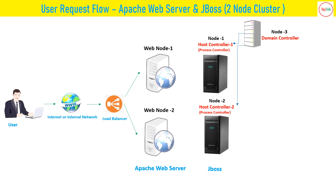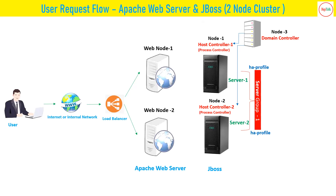Apart from node 1 and node 2, we have a third machine which is the domain controller. This domain controller centrally controls node 1 and node 2 — all deployments and configurations for node 1 and node 2 are done from this central console or central server. This is similar to the admin server in WebLogic Server. So we have three machines: node 3 is the domain controller controlling node 1 and node 2 where applications are deployed. We have a server group called server group 1, created with the HA (high availability) profile, containing server 1 on node 1 and server 2 on node 2.